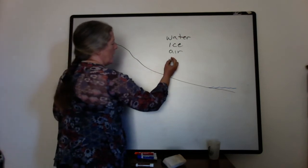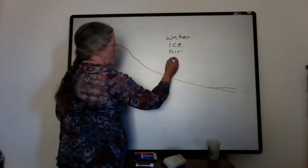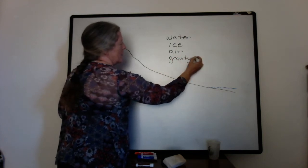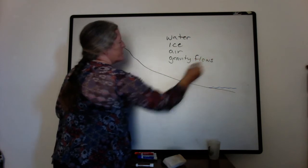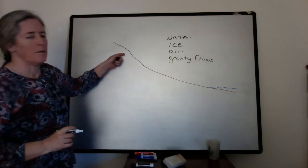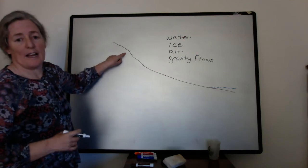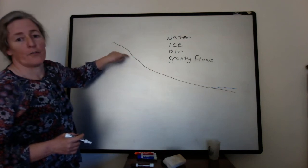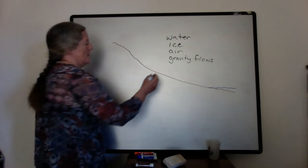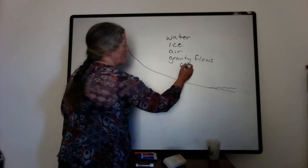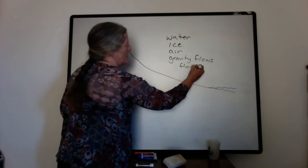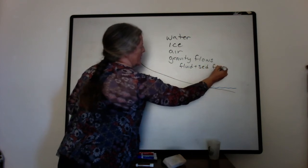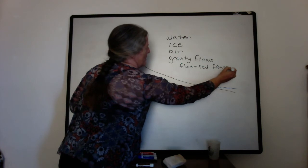And then we also have what we can call gravity flows. These are mixes of sediment and fluid - it can be water, air, or ice - that basically fall down the slope as a mix of different things. So this is fluid plus sediment flowing downhill.